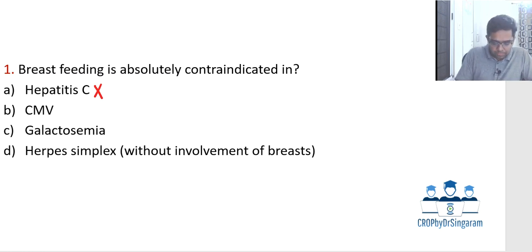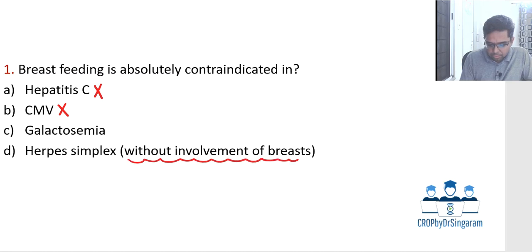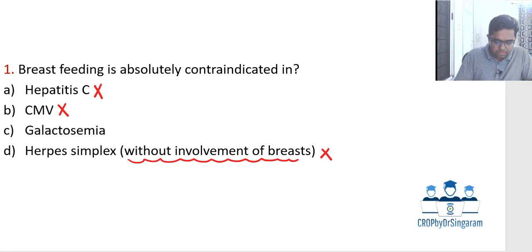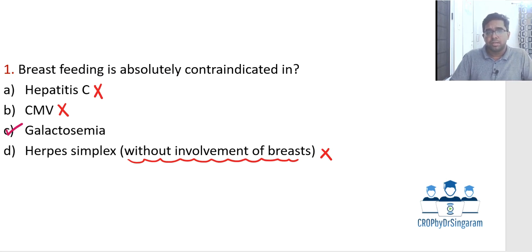Cytomegalovirus is also not transmitted by breast milk, hence not a contraindication. Look at the last option — herpes simplex without involvement of the breast. That itself tells you it is not a contraindication for breastfeeding. So the answer is galactosemia, which is one of the metabolic disorders wherein the baby is not able to utilize galactose. When milk is given, lactose is broken down into galactose, but that galactose cannot be converted into glucose and instead accumulates in organs causing damage.